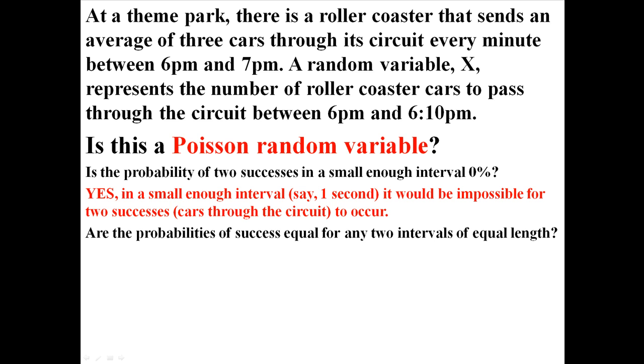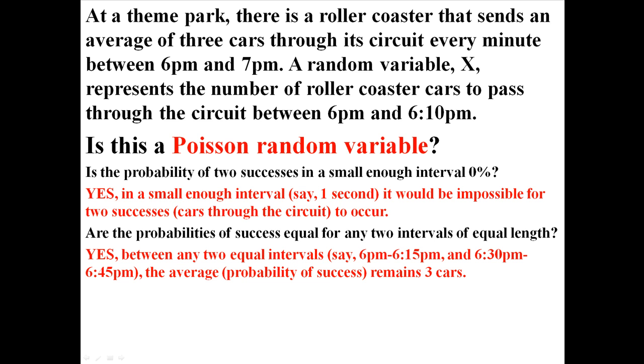Are the probabilities of success equal for any two intervals of equal length? Yes. Between any two equal intervals, like say between 6 and 6:15 and 6:30 and 6:45, the average, or the probability of success, still remains at three cars per minute.